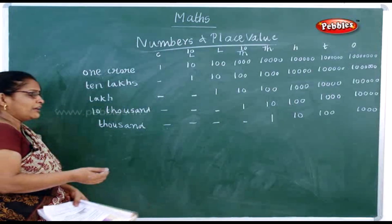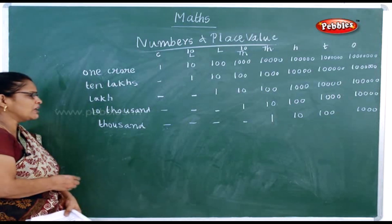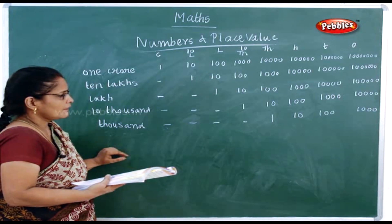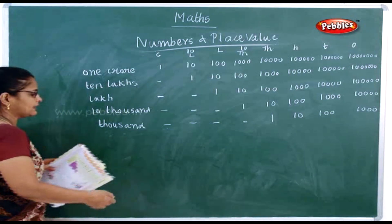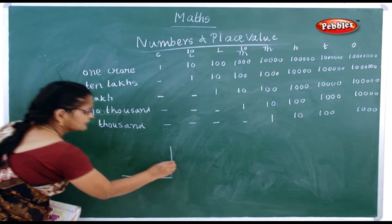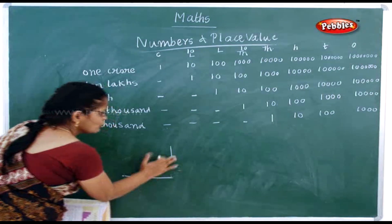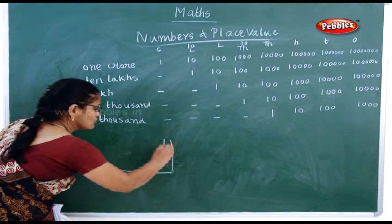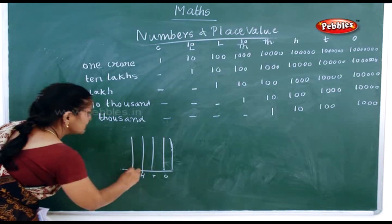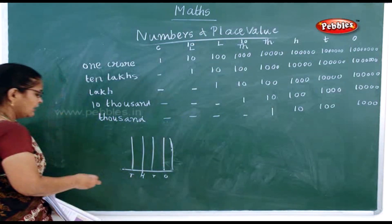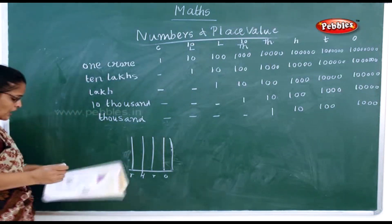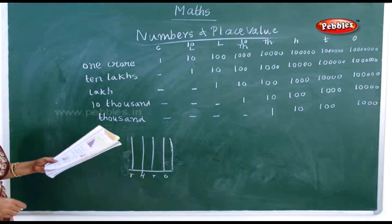Now there is one activity — I think you must have seen the abacus. You'll have small rings in the abacus. This is the abacus. What happens is you'll have the rings in this.